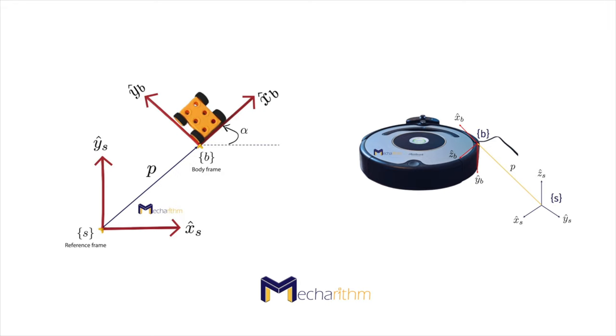In the previous lesson, we became familiar with the concept of the configuration for robots, and we saw that the configuration of a robot could be expressed by the pair R and P, in which R is the rotation matrix that implicitly represents the orientation of the body frame with respect to the reference frame, and P is the position of the origin of the body frame relative to the space frame. In this lesson, we will focus on the orientation, and we will see that we can implicitly represent the orientation using powerful tools named rotation matrices.